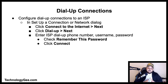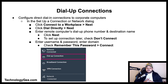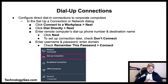To configure a dial-up connection to an ISP in the Setup a Connection or Network dialog, click 'Connect to the Internet,' hit Next, click Dial-up, hit Next, enter the ISP's dial-up phone number, username, and password, check 'Remember this password' if desired, name the connection, then click Connect. To configure direct dialing connections to corporate computers, click 'Connect to a workplace,' hit Next, click 'Dial directly,' hit Next, enter the remote computer's dial-up phone number and destination name. To connect now click Next; to set up for later check 'Don't connect,' enter the username, password, and domain, check 'Remember this password' if desired, then click Connect.